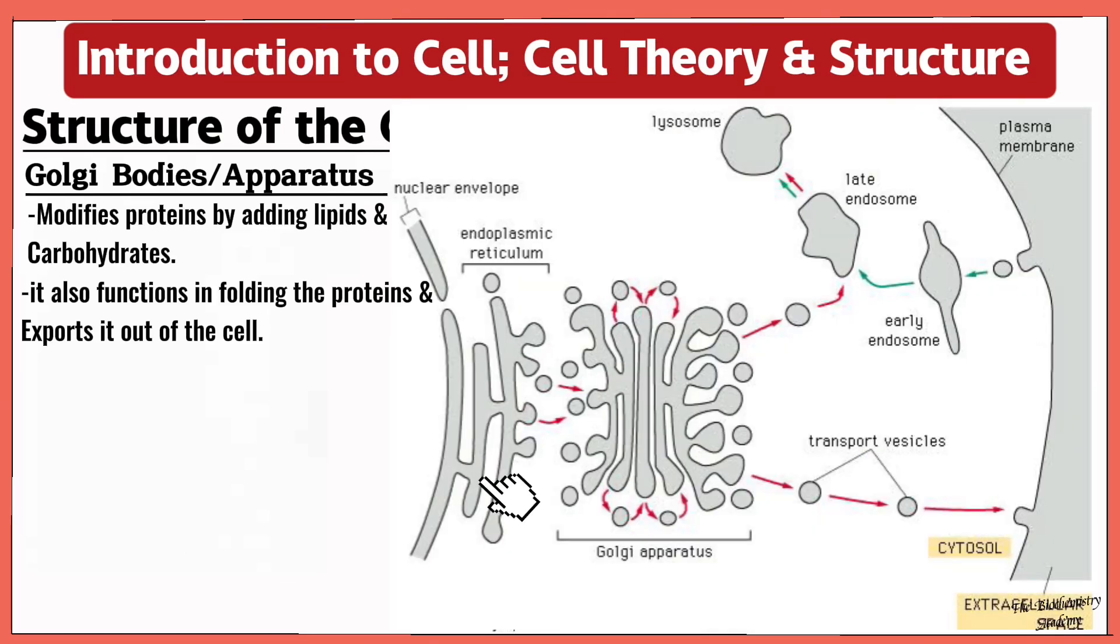So looking at the diagram here, this is the rough endoplasmic reticulum, right? So it moves the protein in this vesicle to the Golgi body. Then the Golgi body modifies the protein in this vesicle. If you see the protein here, it is folded because of the lipids and the carbohydrates that are added, then it is now exported out of the cell to carry out a specific function.